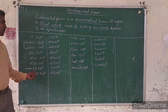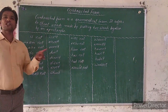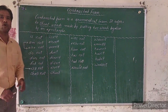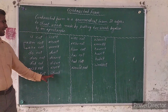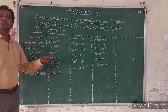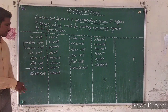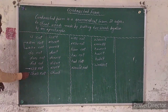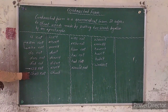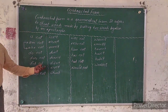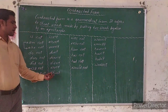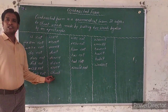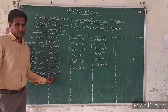Similarly, 'shall not' is never contracted as 'shalln't' — instead, 'shall not' is converted into 'shan't'. So remember: will not → won't, and shall not → shan't.